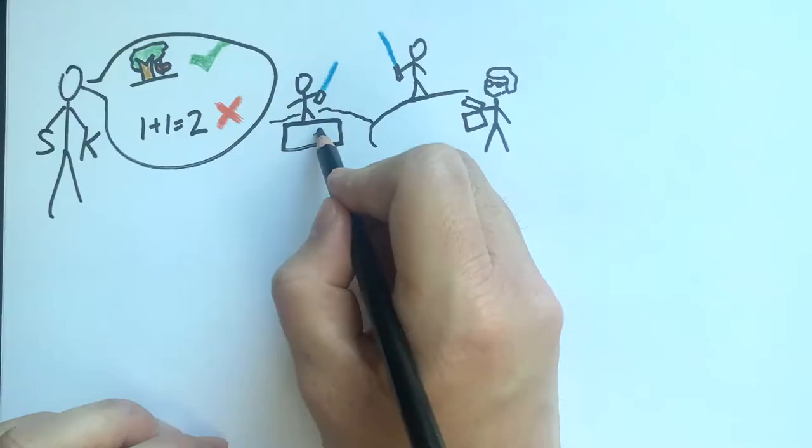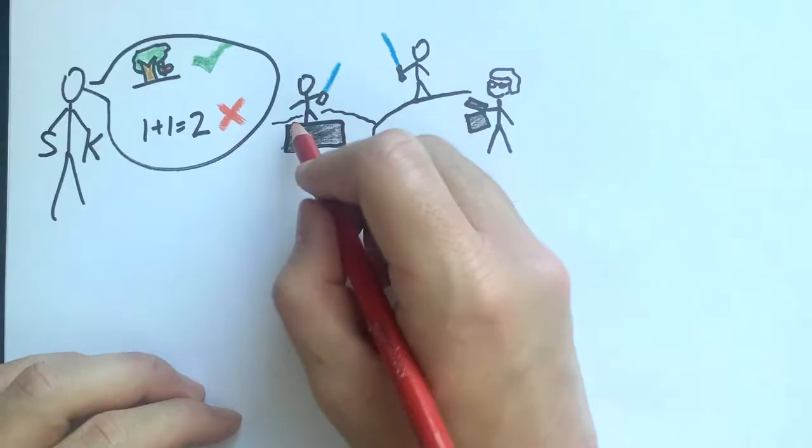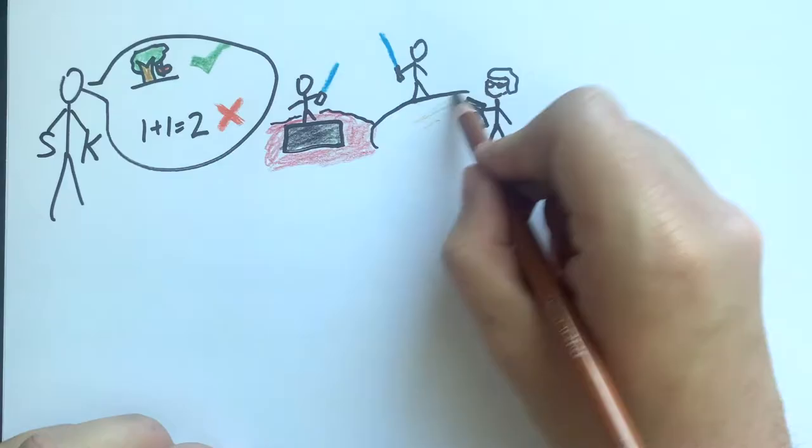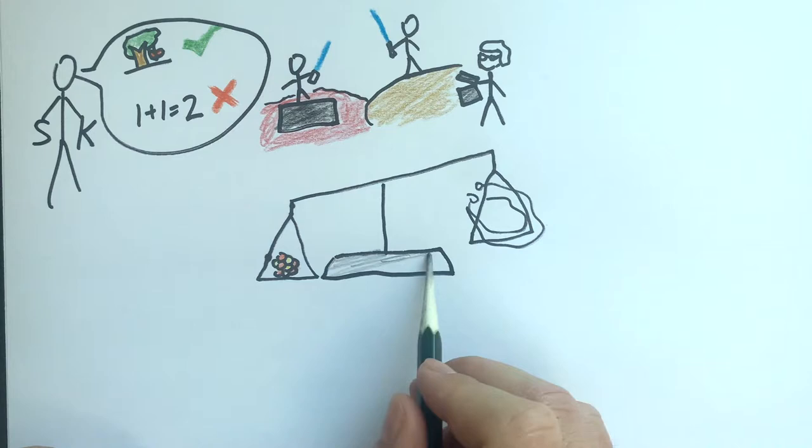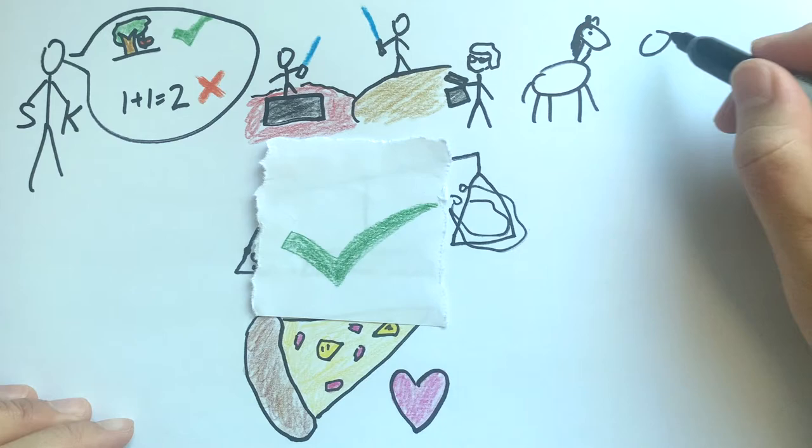So statements like Star Wars was directed by George Lucas or a proton has more mass than an electron or pineapple is good on pizza are true. And statements like all horses are white or Alex doesn't make science videos or The Rise of Skywalker was a good movie are false.